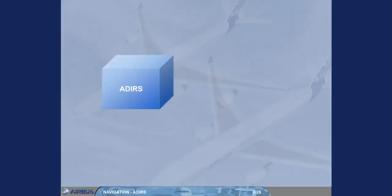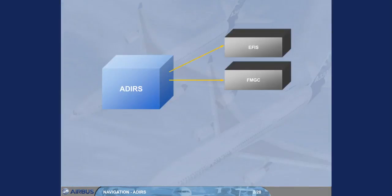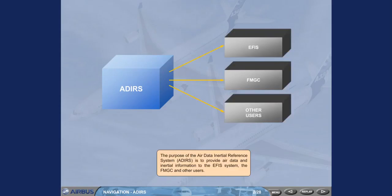The purpose of the AirData Inertial Reference System, ADEAS, is to provide air data and inertial information to the EFIS system, the FMGC, and other users.